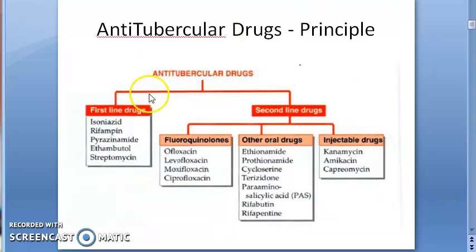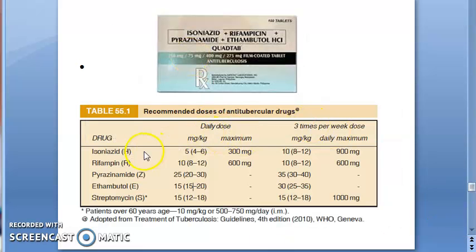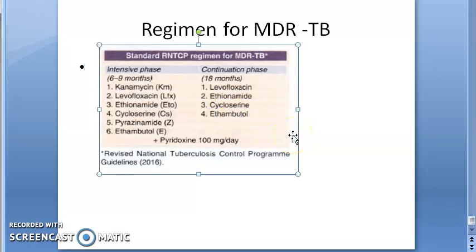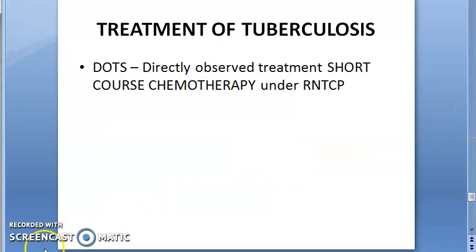In anti-tubercular drugs, the first-line drugs are Isoniazid, Rifampin, Pyrazinamide, Ethambutol, and Streptomycin. Rifampin is part of the HRZE combination. For new patients, give HRZE for two months then HRE for four months — total duration six months. Rifampin is present throughout all six months. For multi-drug resistant tuberculosis, Rifampin is not used; second-line drugs are given instead.